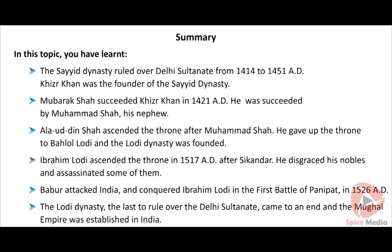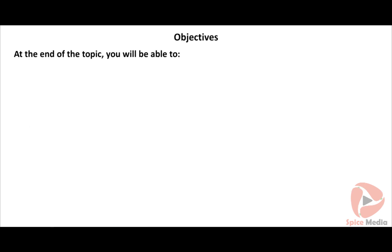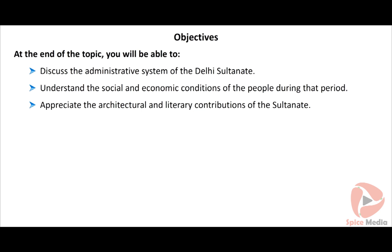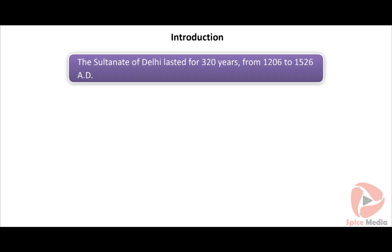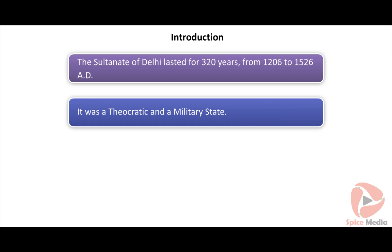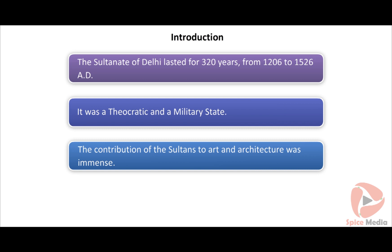Summary: The Syed dynasty ruled over Delhi Sultanate from 1414 to 1451 AD. Khizr Khan was the founder of the Syed dynasty. Mubarak Shah succeeded Khizr Khan in 1421 AD and was succeeded by Muhammad Shah, his nephew. Alauddin Shah ascended the throne after Muhammad Shah and gave up the throne to Balol Lodi, founding the Lodi dynasty. Ibrahim Lodi ascended the throne in 1517 AD after Sikandar. Babur attacked India and conquered Ibrahim Lodi in the first battle of Panipat in 1526 AD. The Lodi dynasty, the last to rule over the Delhi Sultanate, came to an end and the Mughal Empire was established in India.